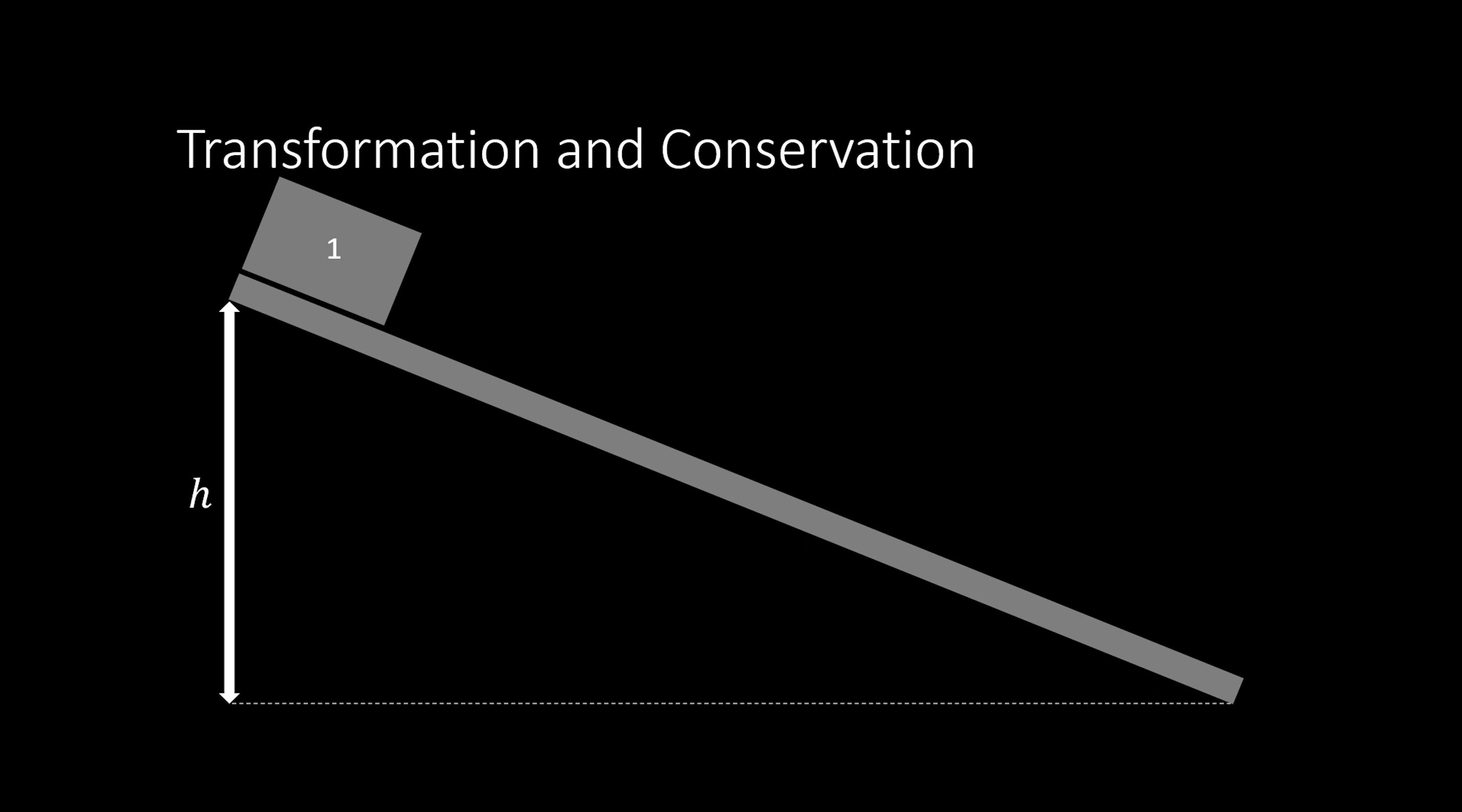But when the block is released, the height of the block decreases as it goes to position two, which means that since the height decreases, we're losing potential energy. But because we're now gaining speed going down the ramp, we have some kinetic energy at position two. And then eventually when the block reaches position three, which we can assume to be at zero height, we have no more potential energy, but that is when kinetic energy is at the highest because that's when the block is going at the fastest speeds.